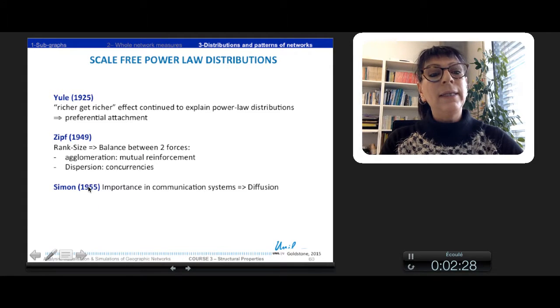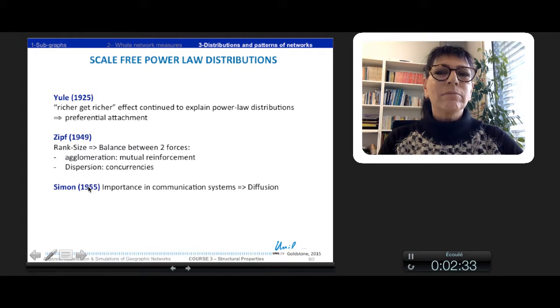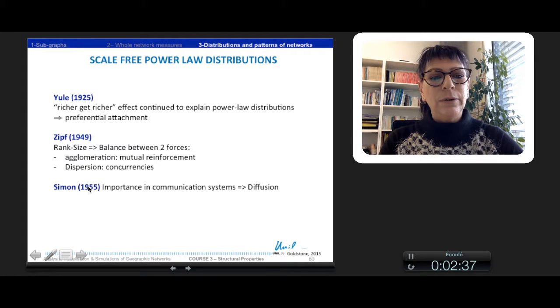This kind of distribution is very popular in many domains. Here we've got three kinds of examples. The first one is the actor collaboration graph.